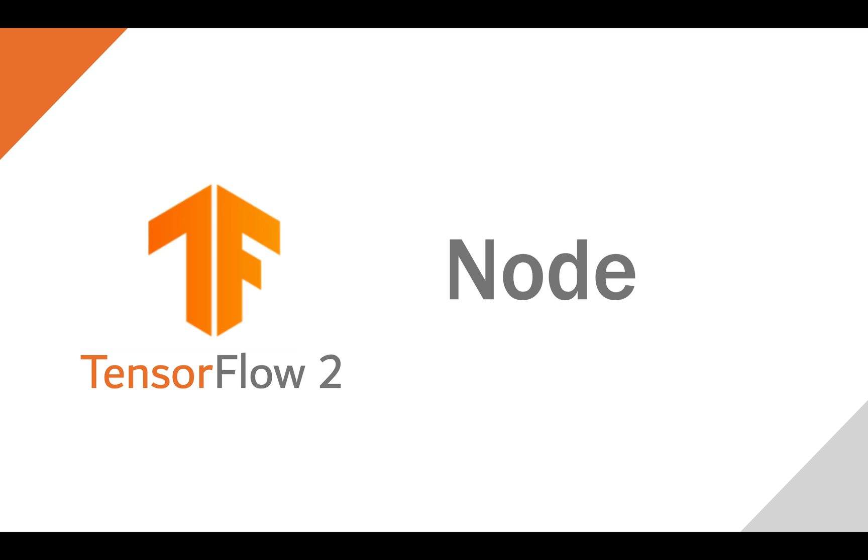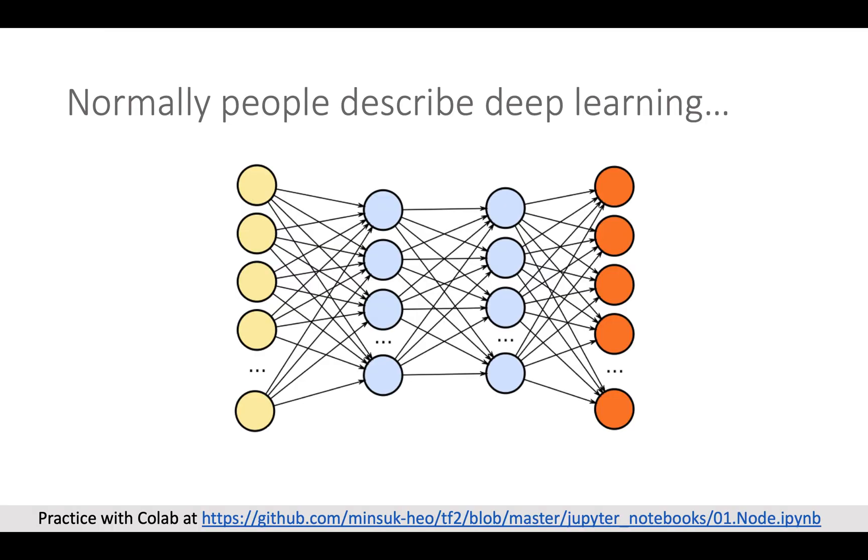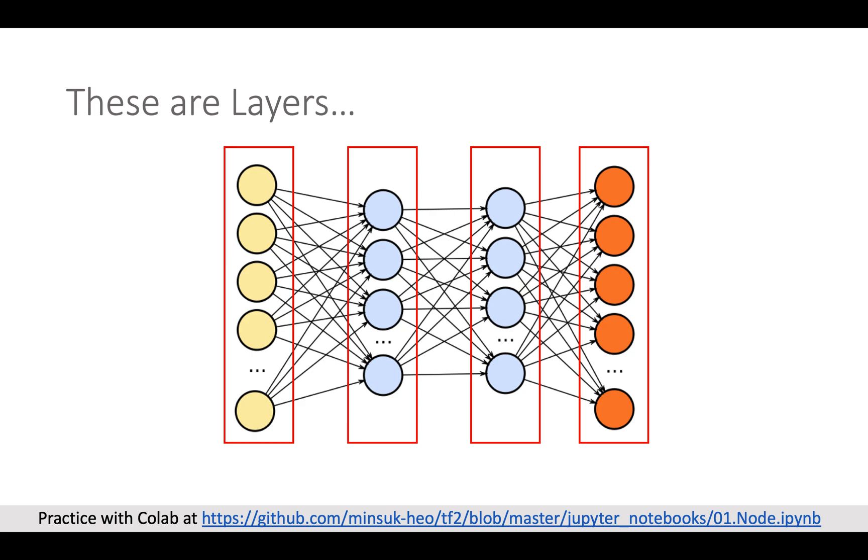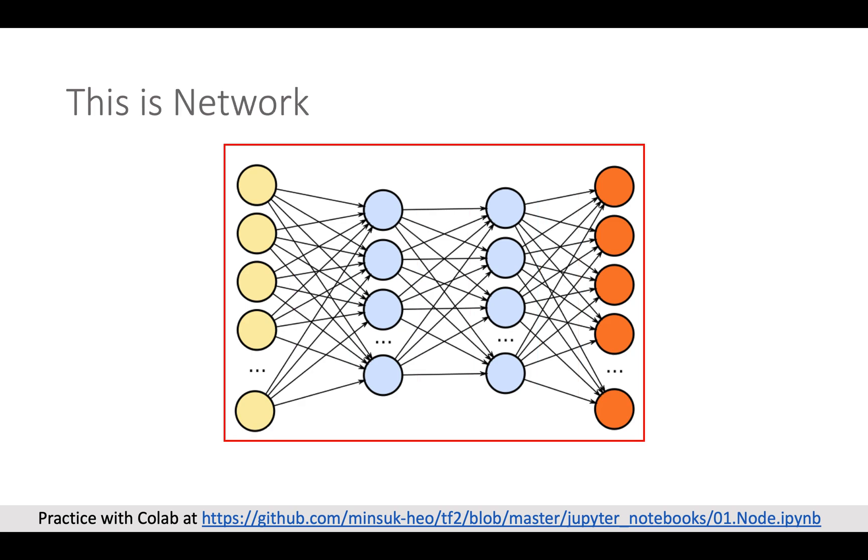Welcome to TensorFlow 2 deep learning tutorial. Today we will learn about nodes. This is the most popular diagram when people describe deep learning. Here all vertices are nodes. Nodes are normally in a layer and we call these connected layers as network.